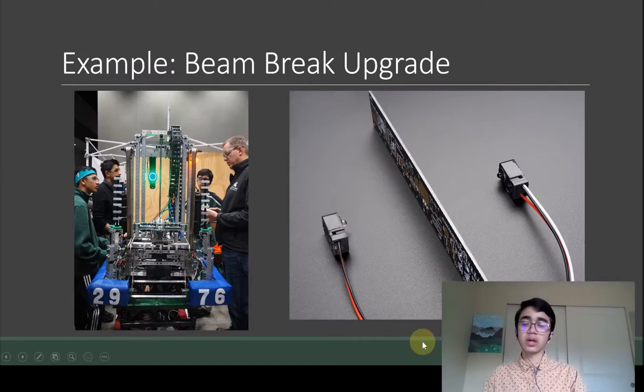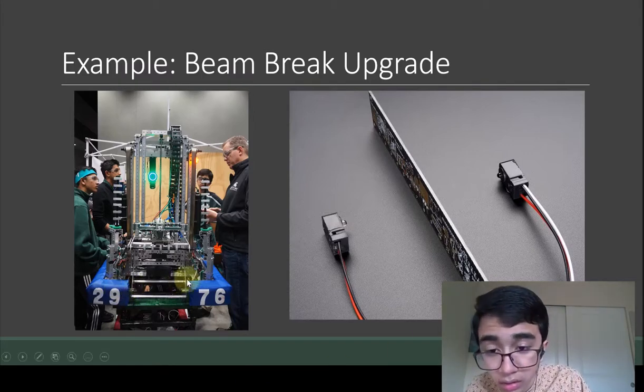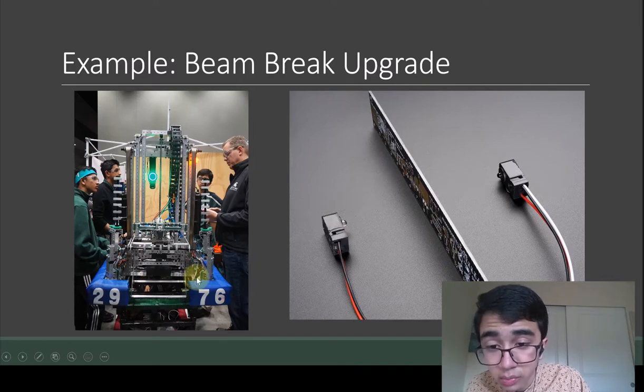In the case of the 2019 robot, as soon as it detected the ball was inside the intake, it stopped running the intake, which makes sense. If you want to find it, the two beam break sensors - one is here and one is here on the other side of the robot.